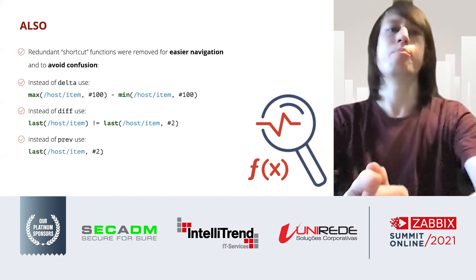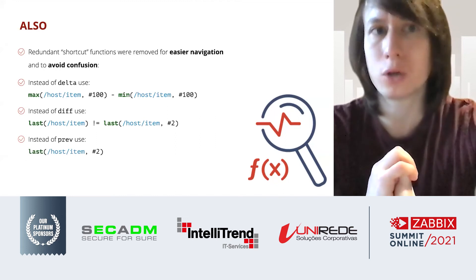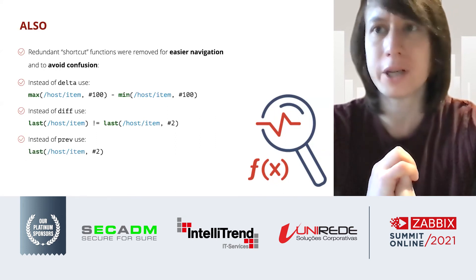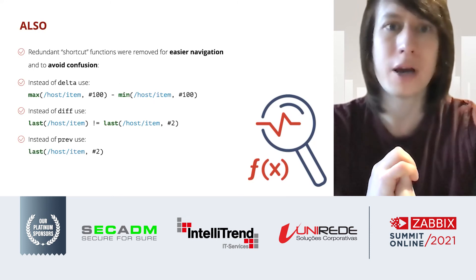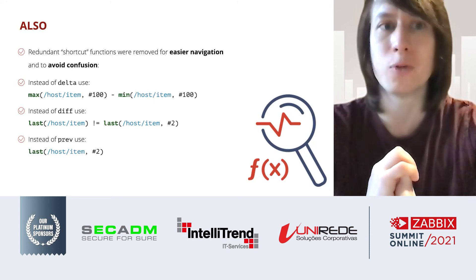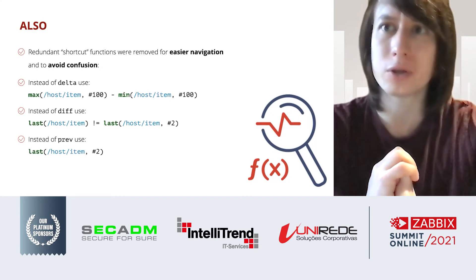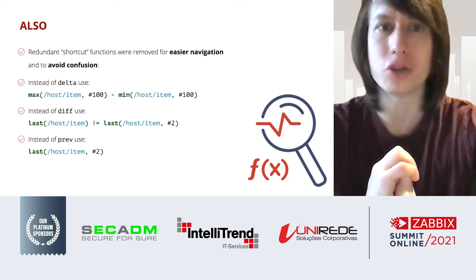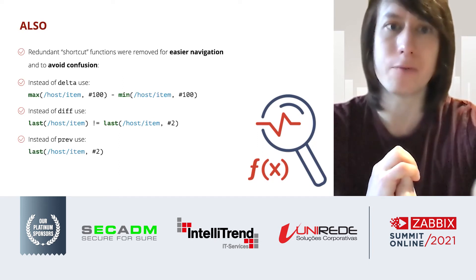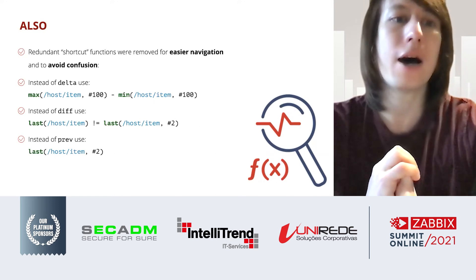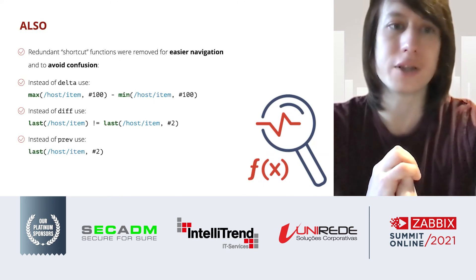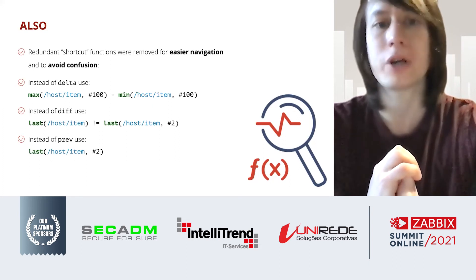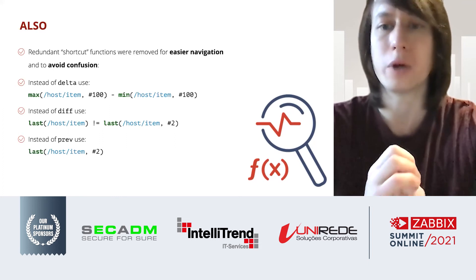Some minor but also very important changes: we removed a lot of shortcut functions to simplify navigation and avoid confusion, without making trigger expressions longer. For example, instead of the delta function you can now just subtract the minimum from the maximum; instead of the diff function you can just compare the latest value and the previous value; and instead of the prev function you can just select the second latest value.